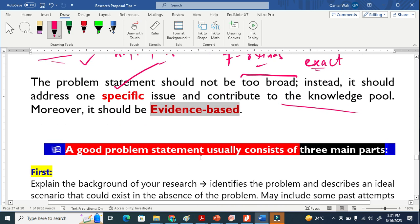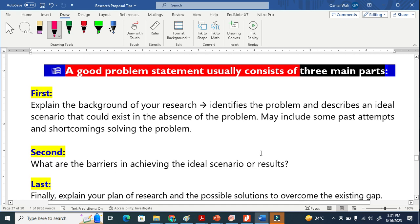Now, a good problem statement usually consists of three main parts. The first part, you are required to basically describe the background of that topic or that specific field you are working. You have to write about the background because you are not supposed to directly attack on the issue. But you have to tell the background and based on that background, you will identify the problems there.